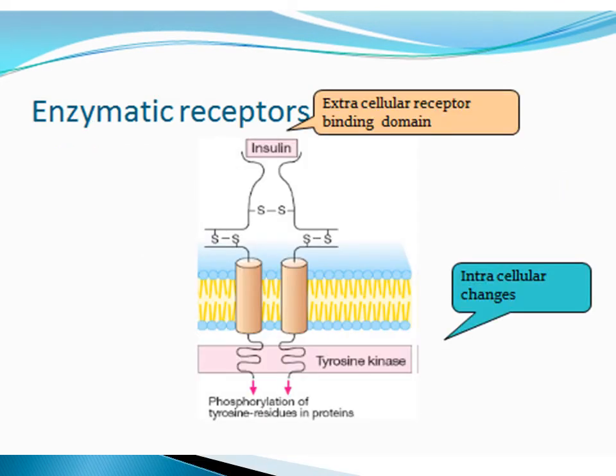Most drugs act through G-protein coupled receptors, which compose the largest class of receptors. These receptors all have 7 transmembrane segments, 3 intracellular loops, and 3 extracellular loops, plus an intracellular carboxy-terminal tail. The biological activity of the receptor is mediated via interaction with a number of GTP-binding proteins, which is why they are known as G-protein coupled receptors.